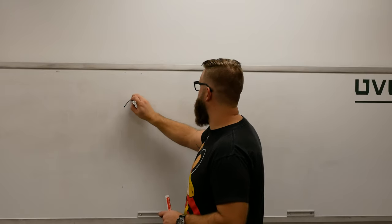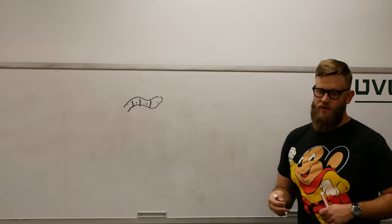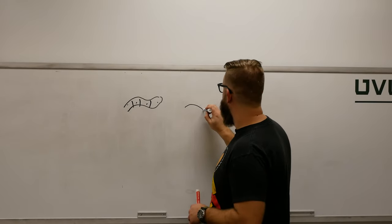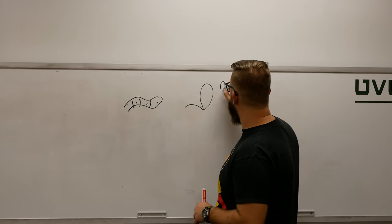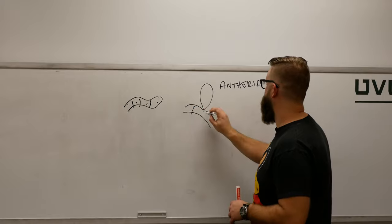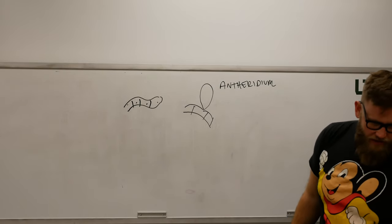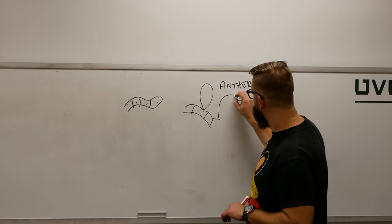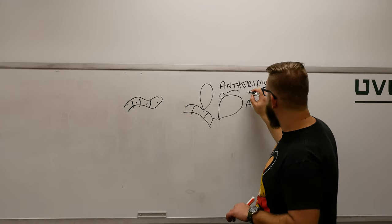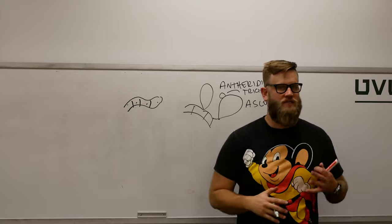For the sexual part: we've got our hypha, it's n, and structures are going to form next to each other. Something called an antheridium will form, and next to that antheridium an ascogonium forms, along with a structure called a trichogyne.